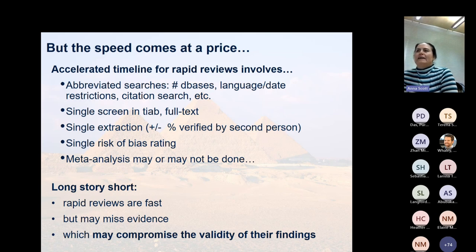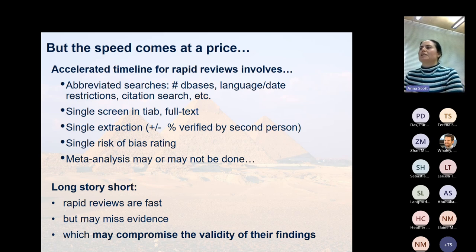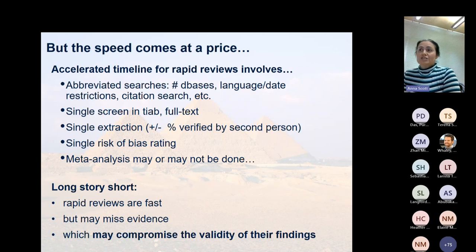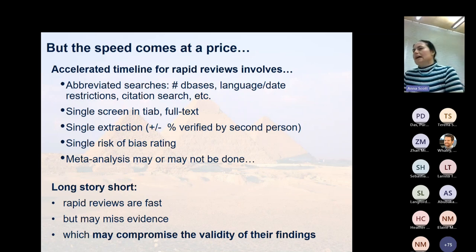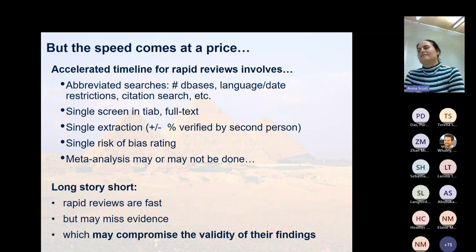In rapid reviews, you typically have abbreviated searches — fewer databases, English-language only, date restrictions, or skipping forward and backward citation searches. There are also changes to processes: instead of the usual dual screen, extraction, and risk of bias rating, you might have single screening with a percentage double-screened, and single extraction or risk of bias rating. Meta-analysis may or may not be done. So rapid reviews are pretty fast, but they might miss evidence, which may compromise the validity of findings.